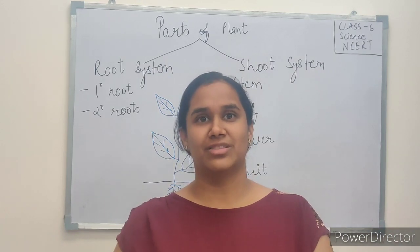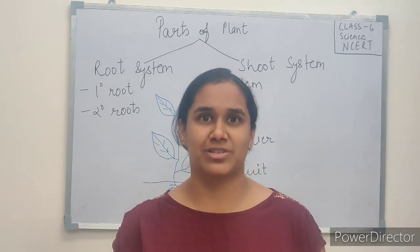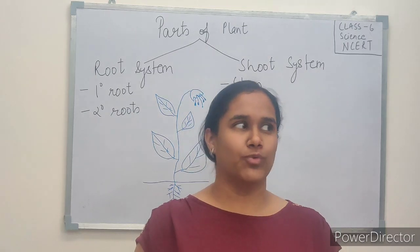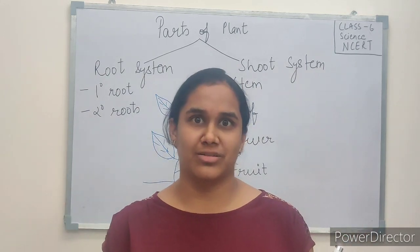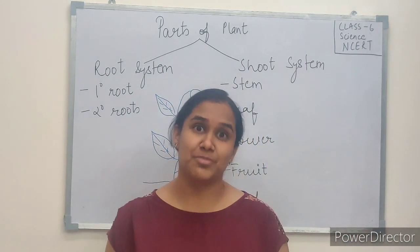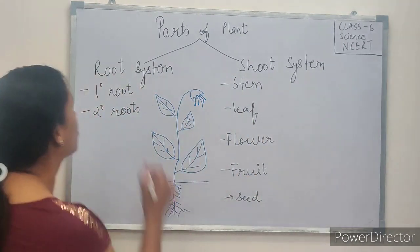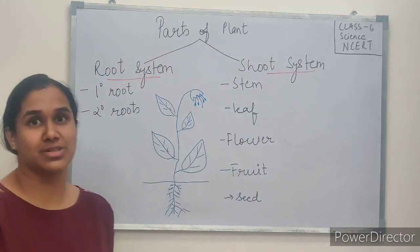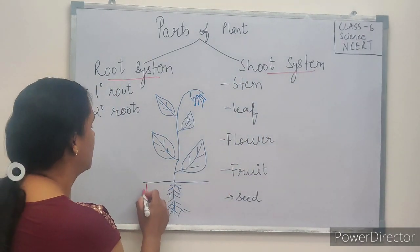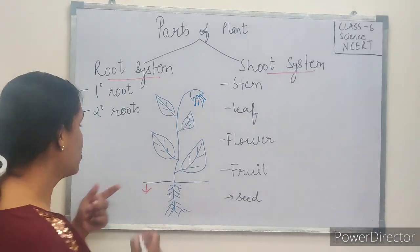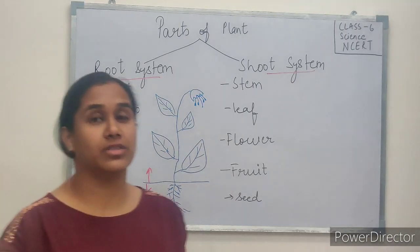We are all very familiar with plants and trees around us, aren't we? They are a part and parcel of our life and they are very important for our survival. When we look at a plant, we see different parts. Today we are going to discuss the different parts of plants. They can be divided into two main systems: the root system and the shoot system. The root system is below the soil and the shoot system is above the soil.